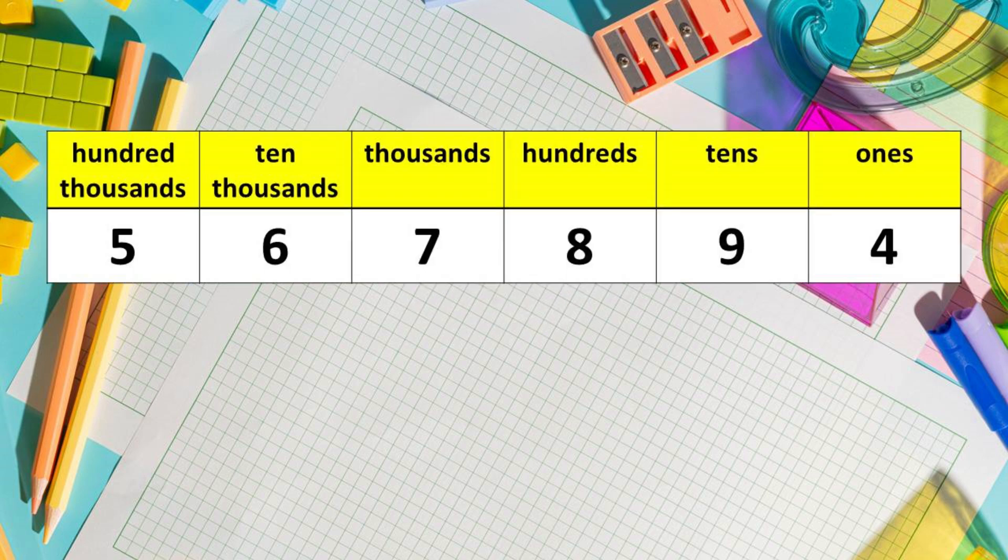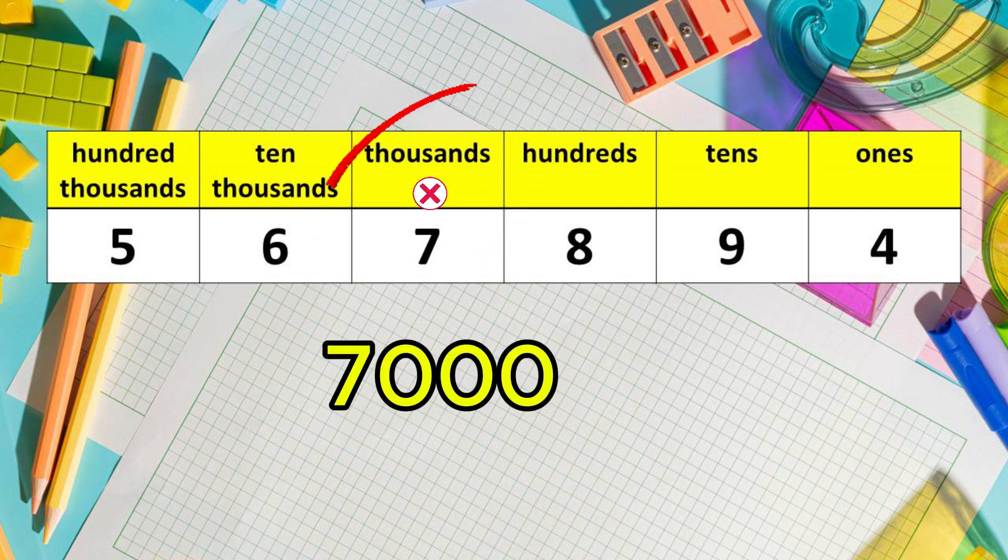The value of each digit is determined by multiplying the place value by the digit. So for example, what is the value of 7? Since 7 is in the thousands place, the value of 7 is 7,000. How did it happen? You are going to multiply the place value which is thousands by 7. So 1,000 times 7 is 7,000. So the value of 7 is 7,000.